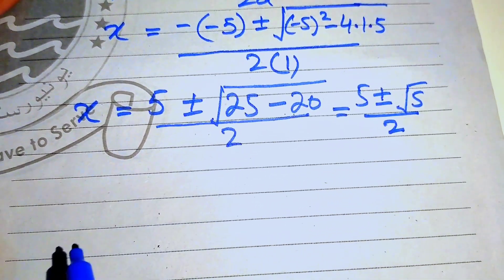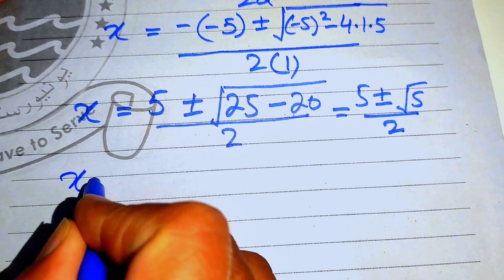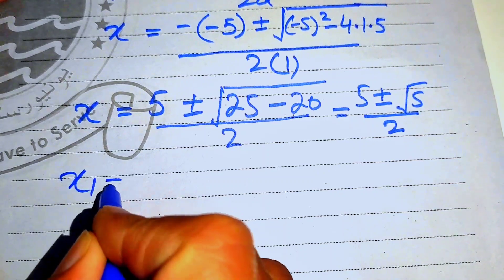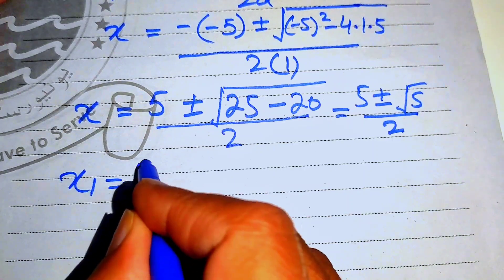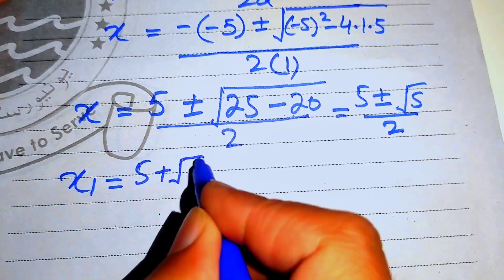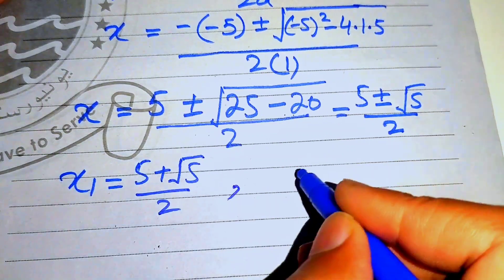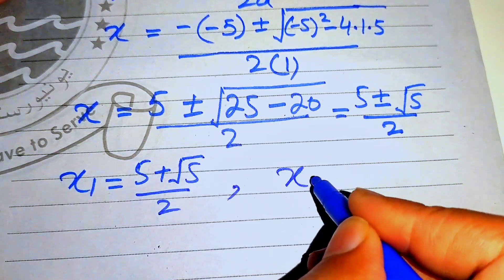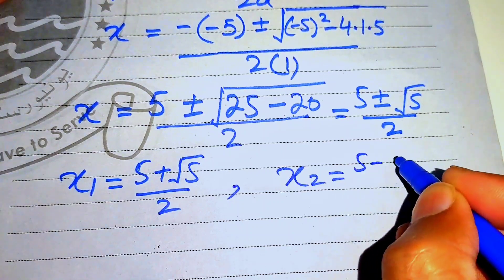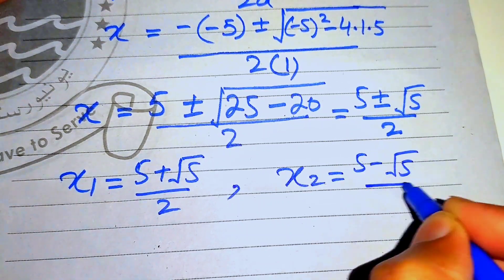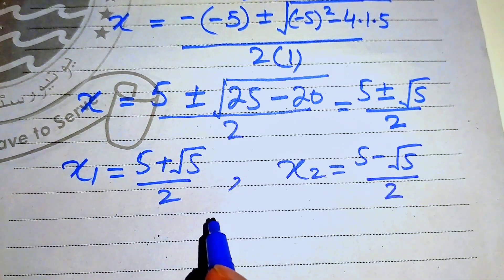We get two values of x. The first value x1 equals 5 plus square root of 5, divided by 2. The second value x2 equals 5 minus square root of 5, divided by 2.